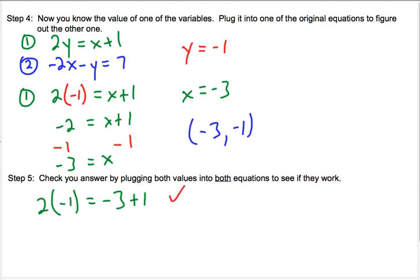And then in equation 2, we have negative 2 times x minus y. Now that's a double negative there because we have a minus, and then y itself is also negative.